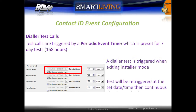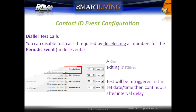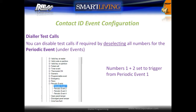A dialer test is always triggered when exiting program mode. A test will be re-triggered at the set date and time and then continue based on the interval. To disable test calls, it is required to deselect all numbers for the periodic event under events.